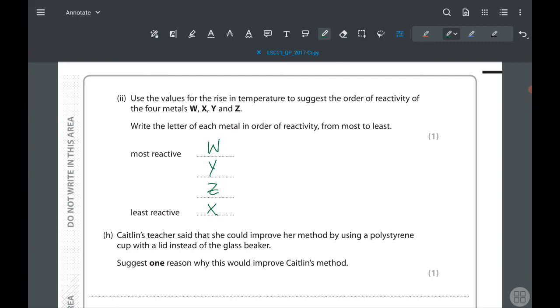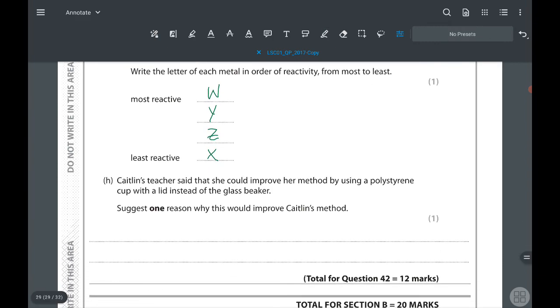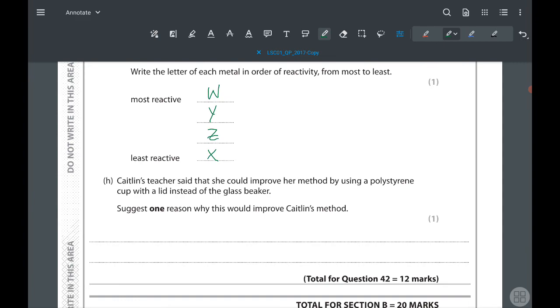Use the values of the rise in temperature to suggest the order of reactivity of four metals W, X, Y, Z. The most reactive to least reactive. You can see the most reactive is W, then Y, Z, and X. Caitlin's teacher said she could improve her method by using a polystyrene cup with a lid instead of a glass beaker. Suggest one reason why this would improve Caitlin's method. Because we know polystyrene is an insulator, so this container can be insulated. Without using a glass beaker, if she uses polystyrene, the heat will not... We can say there can be less heat lost. Polystyrene is a good insulator, so it reduces heat lost. It's a one-mark question, so this much is enough. But you can talk about the lid as well - the lid will reduce heat lost.